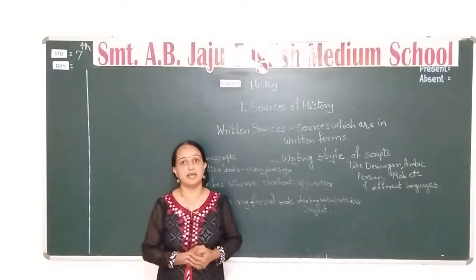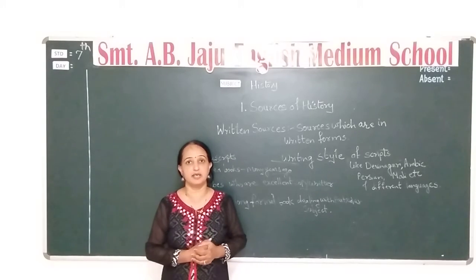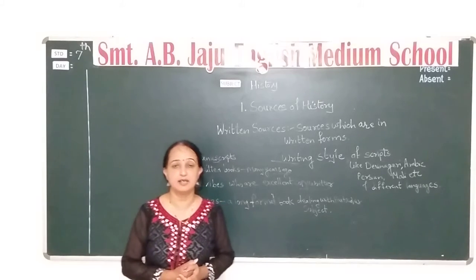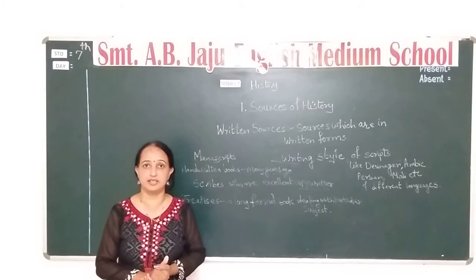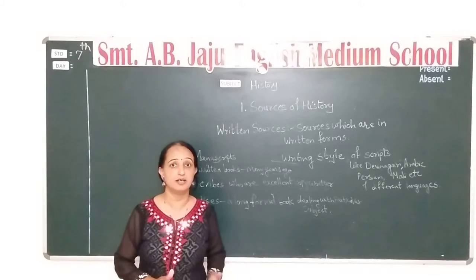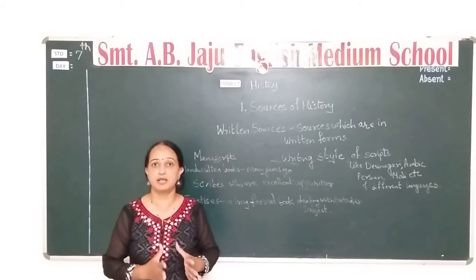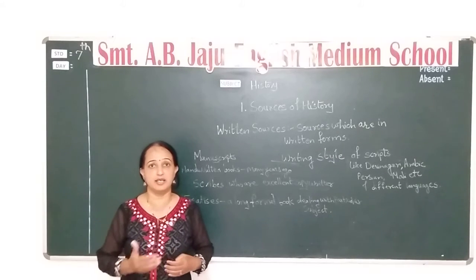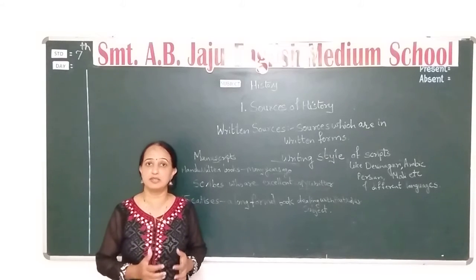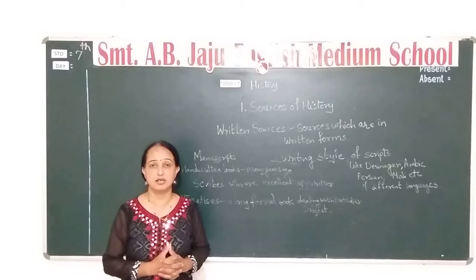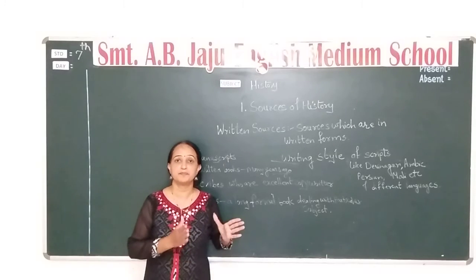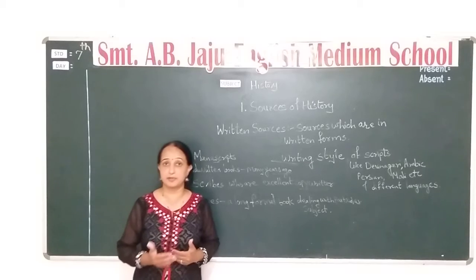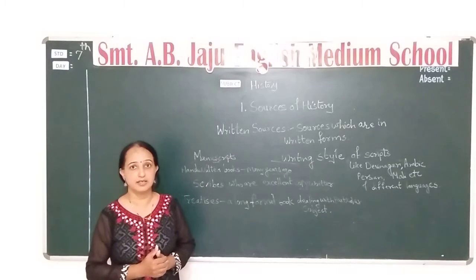History किस बयाद पर लिखी जाती है? जो sources मिलते हैं, जिस बयाद पर वो उस पर believe कर सकते हैं, उसके उपर history लिखी जाती है। ऐसे हमने last video में देखा — उसमें हमने material sources के बारे में देखा। Material sources मतलब जो हम लोग देख सकते हैं, छू सकते हैं। उसमें last video में sources, coins, inscriptions, और copper plates के बारे में देखा।